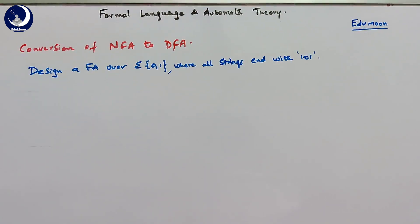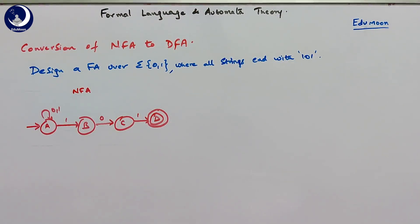We take an example of designing a finite automata over sigma equal to {0, 1}, where all strings end with 1, 0, 1. This is a similar example discussed in our earlier videos. The NFA has four states A, B, C, D. You can see that A on 1 goes to both A and B — a traversal on 1 going to two states from A, as marked in green.